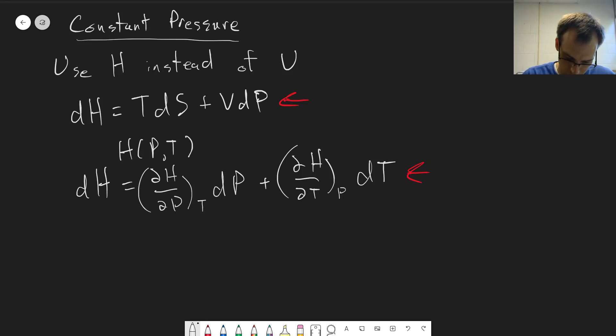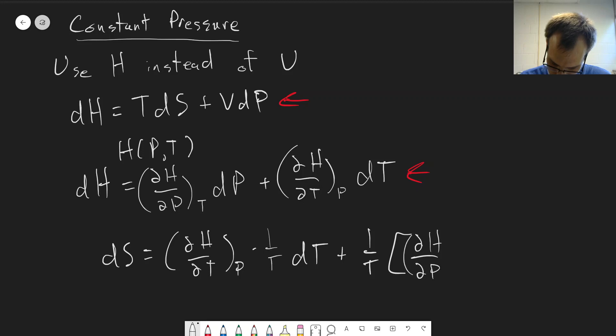All right, so that will give us, I'll just skip a little bit of the algebra here, but it's exactly the same as it was for the dU case. dS is equal to (dH/dT) at constant P times 1 over T dT. Just making sure I'm getting all my partial derivatives correct. Plus 1 over T times (dH/dP) at constant T, minus the volume times dP.